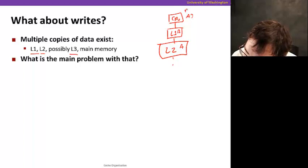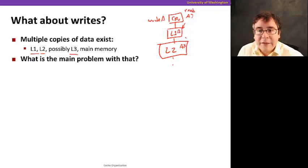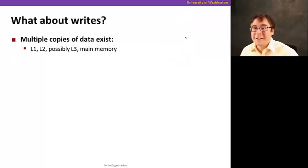This is when I'm reading, reading A. But what happens when I now write to A? If I write only here, I'm going to disagree what's here, and vice versa. The main problem is that the copies of the same data spread over the caches in the hierarchy might disagree with each other. That's not a good thing. Disagreement is not a good thing.